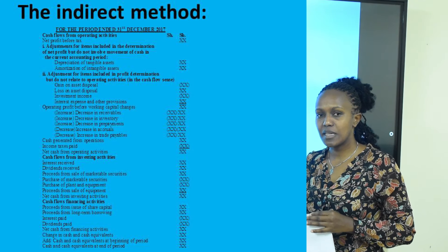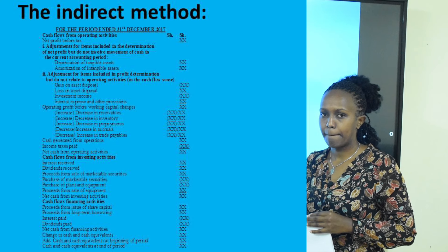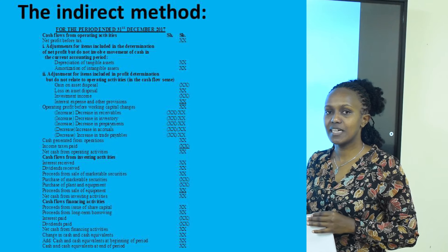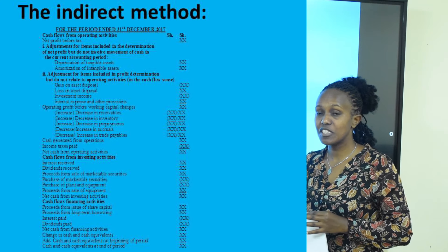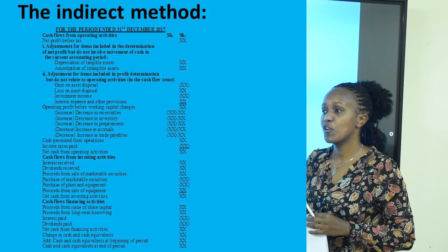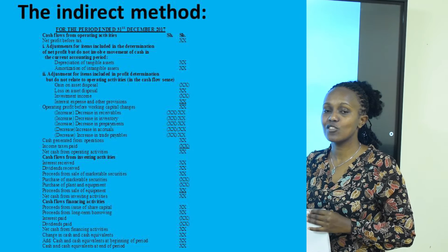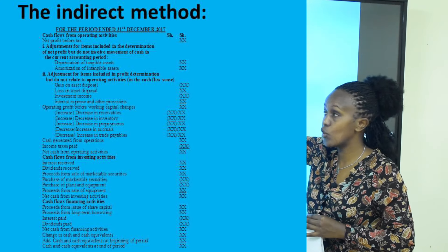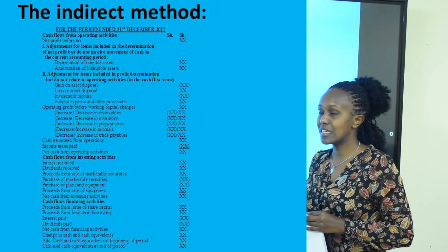Once we have the net profit, we make adjustments for items that were included when determining net profit but do not involve a cash movement. One such expense is depreciation. As much as depreciation is an expense, there is no money that the organization pays to anybody called depreciation. Depreciation is not a cash movement — it is an expense, but it does not represent movement of cash from the organization to an outside party. So if we subtracted depreciation to arrive at net profit, we add it back because it does not represent a cash flow.